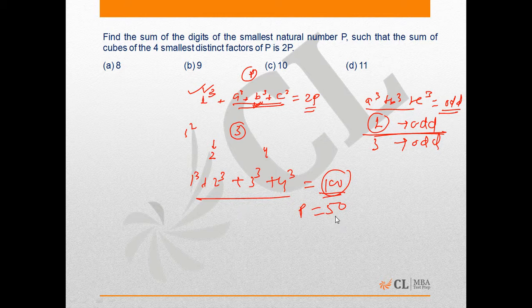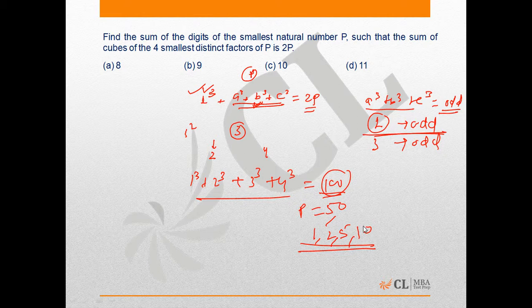The smallest four factors of 50 are 1, 2, 5, and 10, which does not confirm the given condition, which means the factors that we have taken here are not feasible.